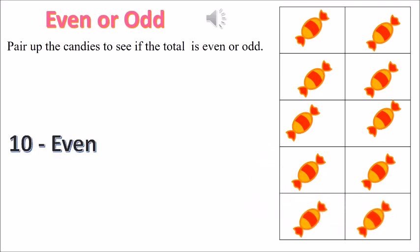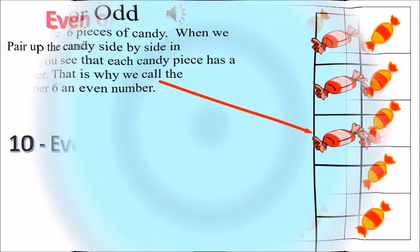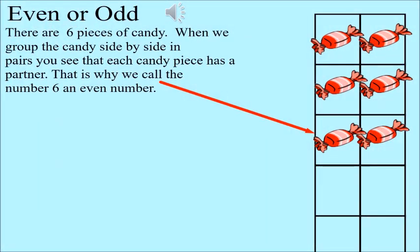Pair up the candies to see if the total is even or odd. In this example, we see there are 6 candies. When we pair them, we see that no candies are left out. Each candy has a pair. So, this is an even number. 6 is an even number.